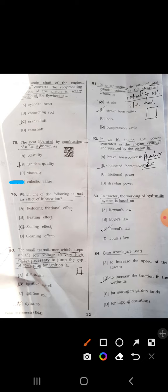Eightieth: a small transformer which steps up the low voltage to very high voltage necessary to jump a gap of spark plug for ignition. I think the most probable answer is ignition coil or distributor, somewhere ignition switch.